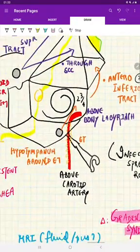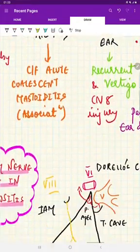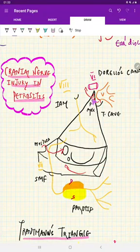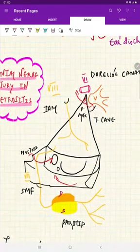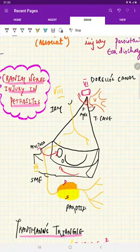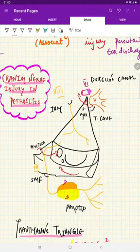When infection spreads through the petrous apex, it can involve the sixth nerve in Dorello's canal and the fifth nerve in the trigeminal cave. Sixth nerve involvement causes diplopia, fifth nerve involvement causes retro-orbital pain.